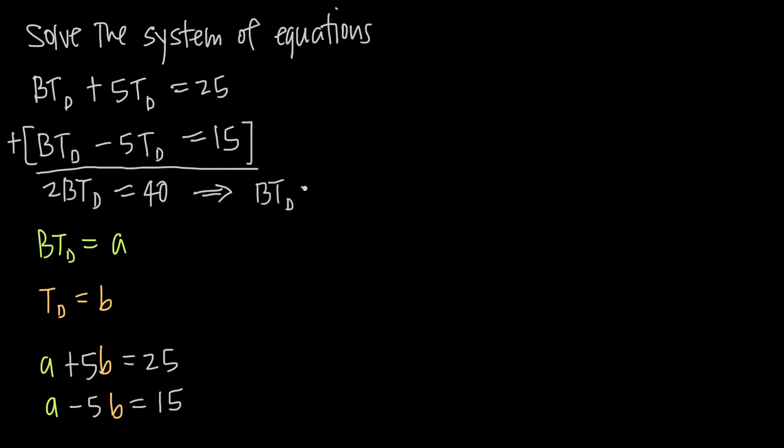If we divide both sides of this equation by 2, we get BT sub D equals 20. Now that we have a value for BT sub D equals 20, we can go ahead and plug that back into our first equation.